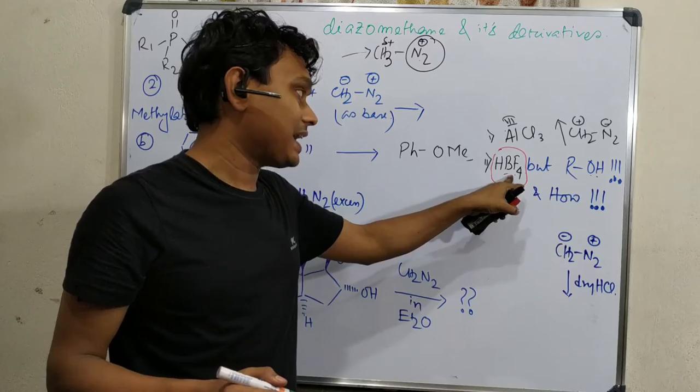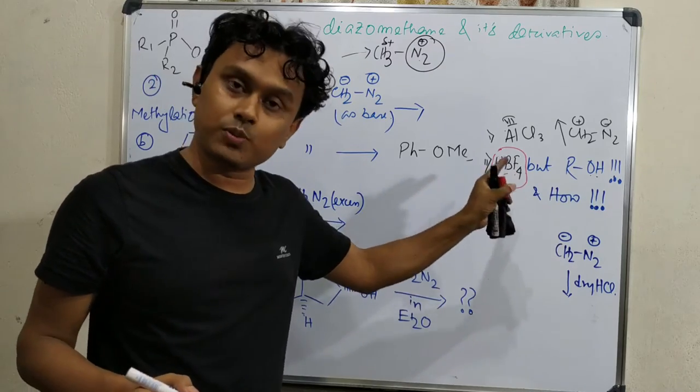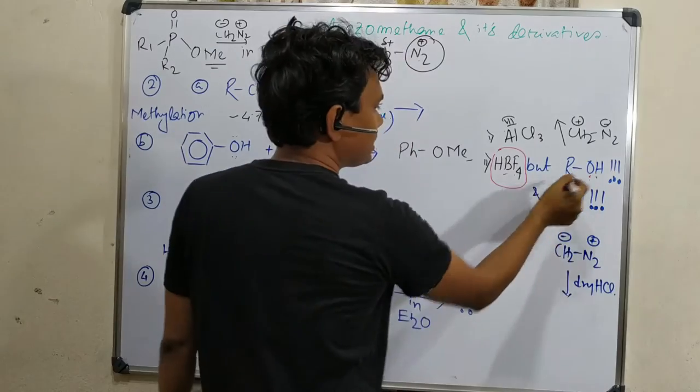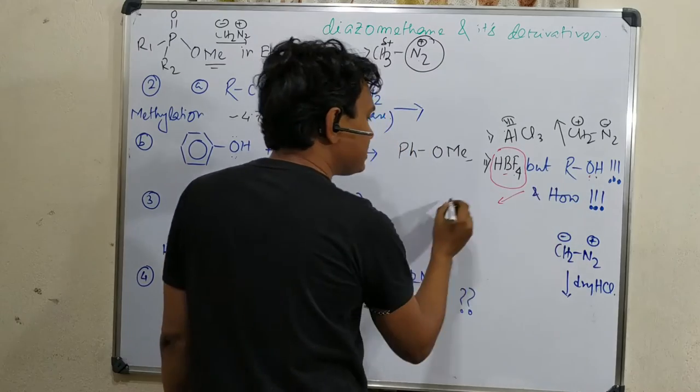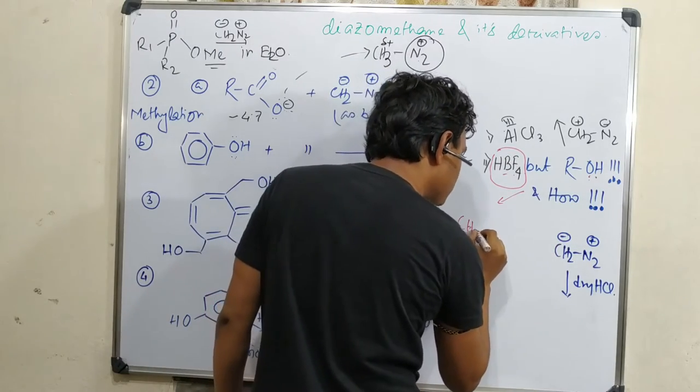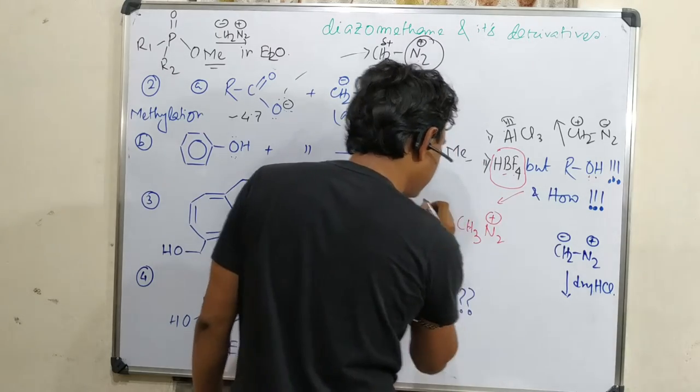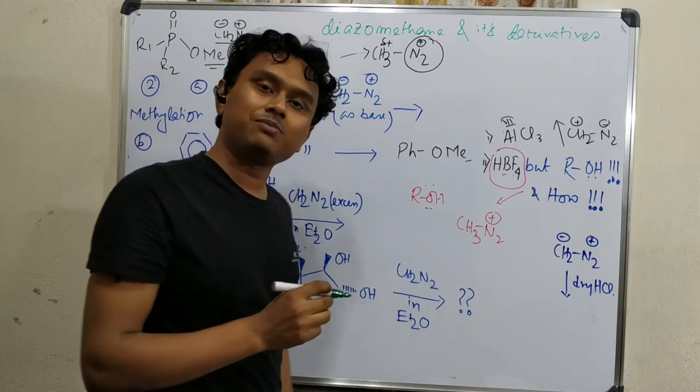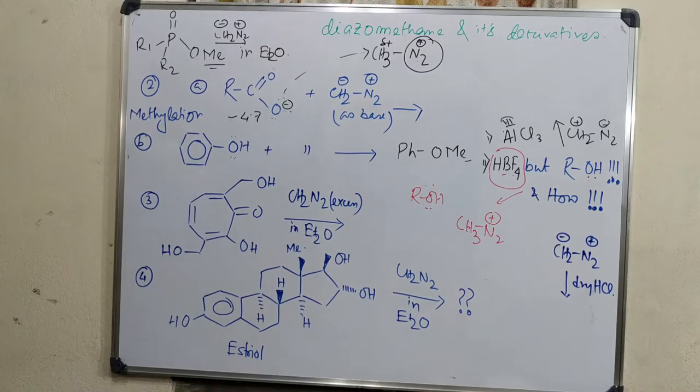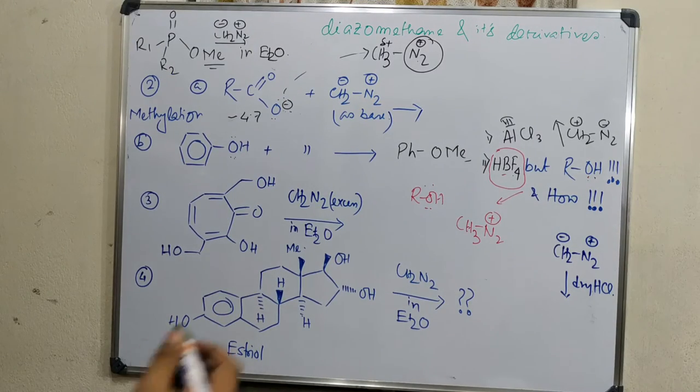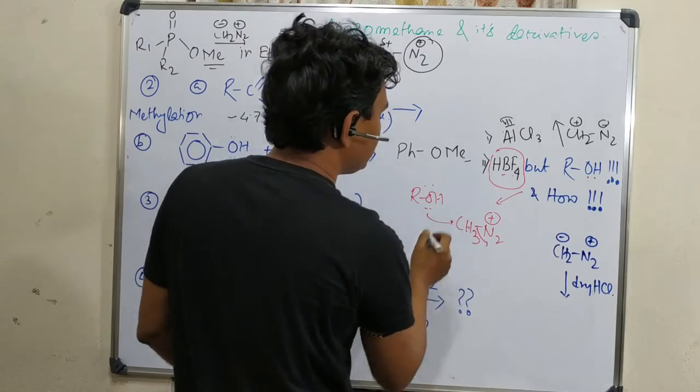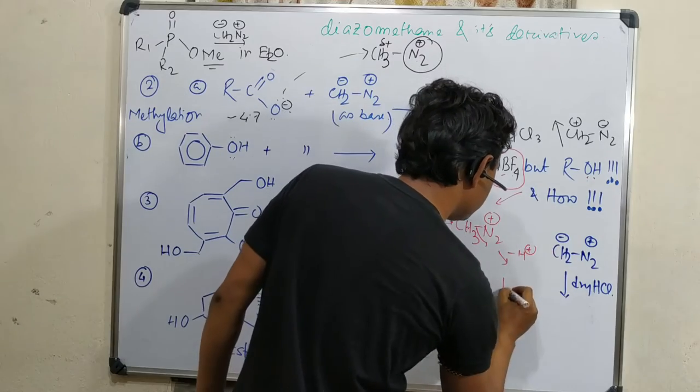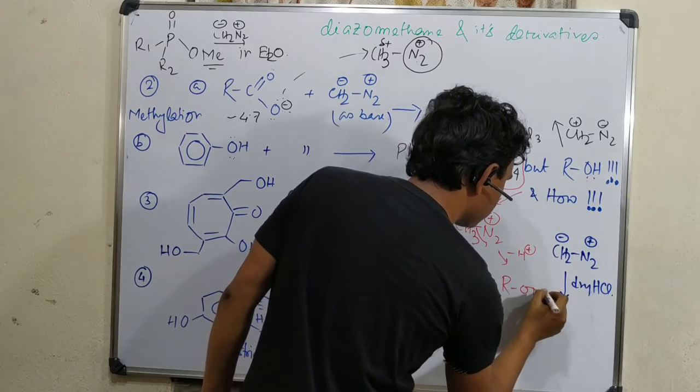HBF4 provides proton and acts similarly as carboxylic acid that protonates, but BF4- doesn't attack the corresponding methyl ether. In case of HBF4, first diazomethane forms CH3N2+. Now the leaving group is very good. Although the nucleophile is not that much strong, the leaving group is very good. That's why it attacks and eventually leaves, producing RO-CH3 after proton elimination.